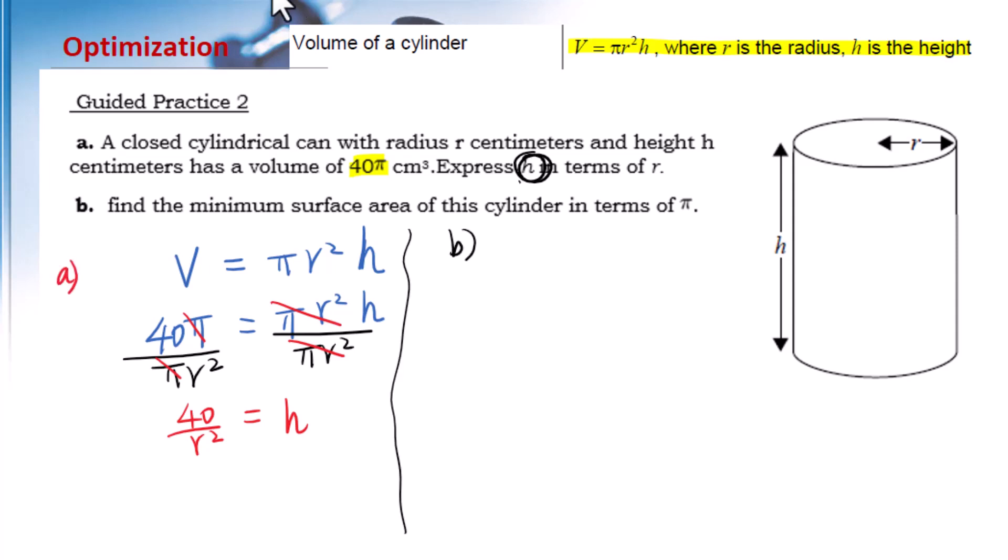Let's go to b. Find the minimum surface area of this cylinder in terms of π. Minimum surface area - let's go to the formula chart to find the formula for surface area.